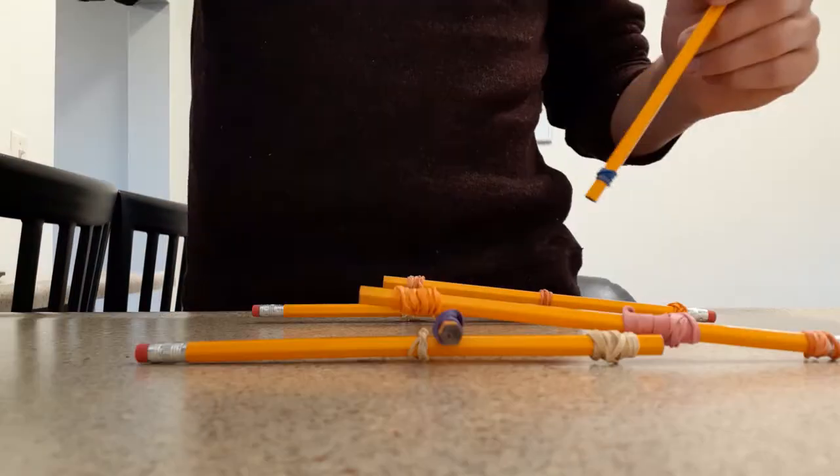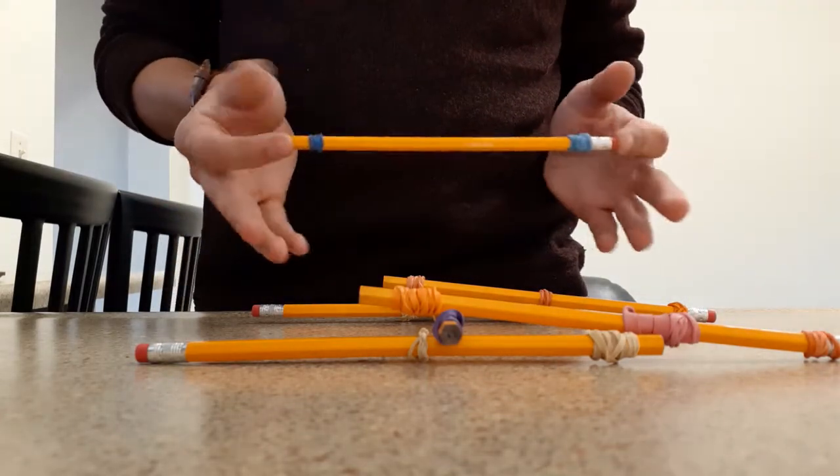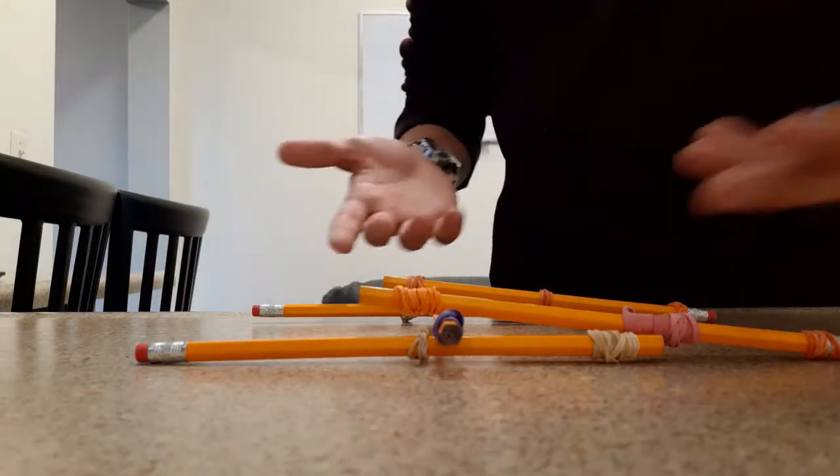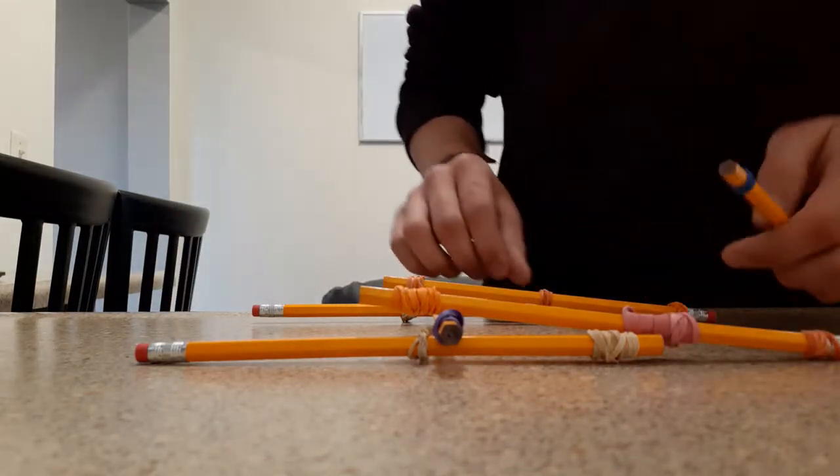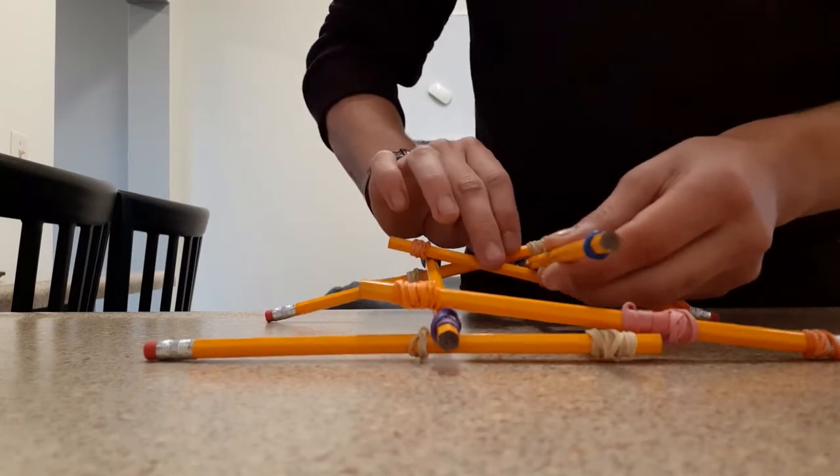After getting to this point where you have these two pencils on top like this, you're going to want to grab another pencil that has a rubber band at either side and simply slide it up underneath. This is normally where you would need an extra set of hands but I'm going to simply do it by myself by lifting one up very carefully at a time and placing this in between.